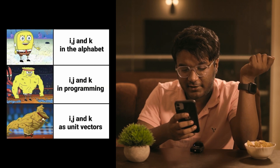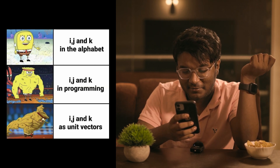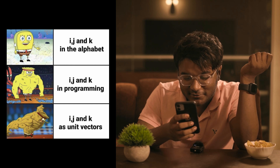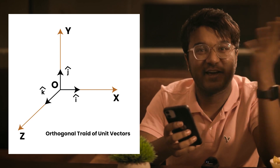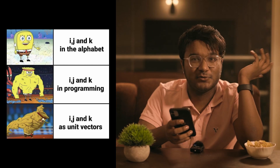I, J, K in the alphabet are consecutive — A, B, C, D, E, F, G, I, J, K, L, M, N, O, P. I, J, K in programming languages are three loop variables — you write one loop I, one loop J, one loop K. I, J, K as unit vectors are orthogonal vectors that determine the x-axis, y-axis, and z-axis. So mathematicians use I, J, K very well and respect it. SpongeBob is losing it.